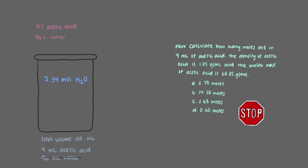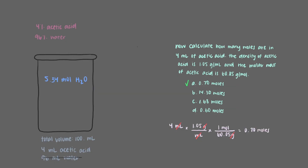Now calculate how many moles are in 4 milliliters of acetic acid. The density of acetic acid is 1.05 grams per milliliter, and the molar mass of acetic acid is 60.05 grams per mole. To calculate this, we start with 4 milliliters of acetic acid and multiply by the density, which cancels out the milliliter units and leaves us with grams. We then multiply by the molar mass of acetic acid to cancel out the grams and be left with moles. We get that there are 0.70 moles in 4 milliliters of acetic acid. Our beaker contains 0.70 moles of acetic acid and 5.34 moles of water.